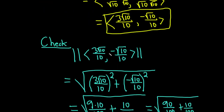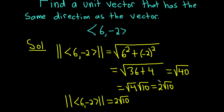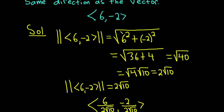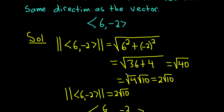A quick recap: the question was to find a unit vector in the same direction as (6, −2). You start by finding the magnitude, then divide each component by the magnitude. This process is called normalizing, or normalization. We've essentially shrunk the vector — before, it had a magnitude of 2√10; after normalizing, the magnitude is 1. The direction is preserved.